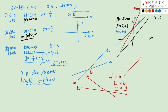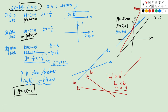When using the form Y equals to KX plus H, you have to be careful. Sometimes, if there is no gradient, there is no such form. However, the form AX plus BY plus C equals to 0 can cover all types of straight lines.